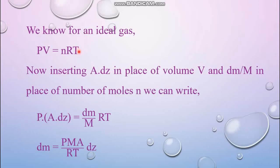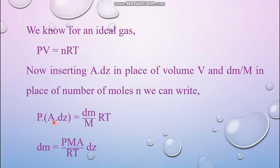For an ideal gas, PV = nRT. Replacing volume V with A·dz and number of moles n with dm/M, the equation becomes P × A·dz = (dm/M) × RT. Rearranging, we get dm = (P·M·A)/(RT) × dz.